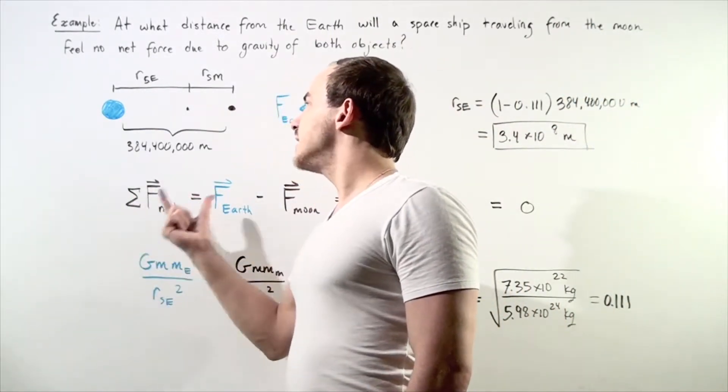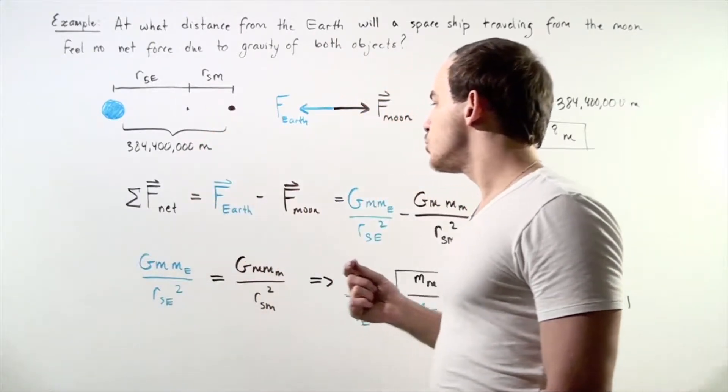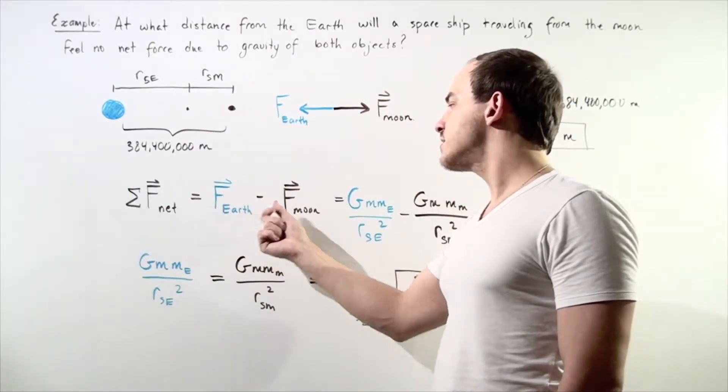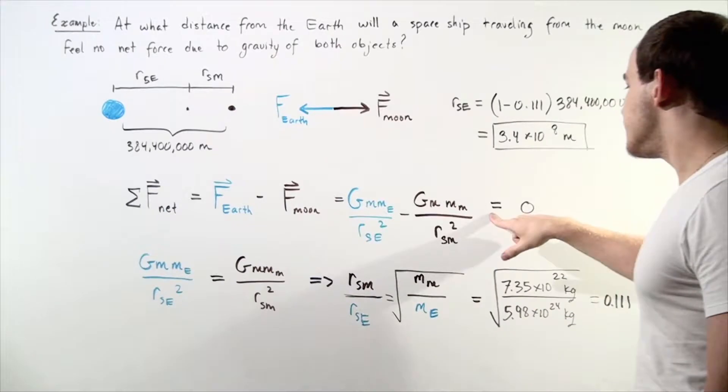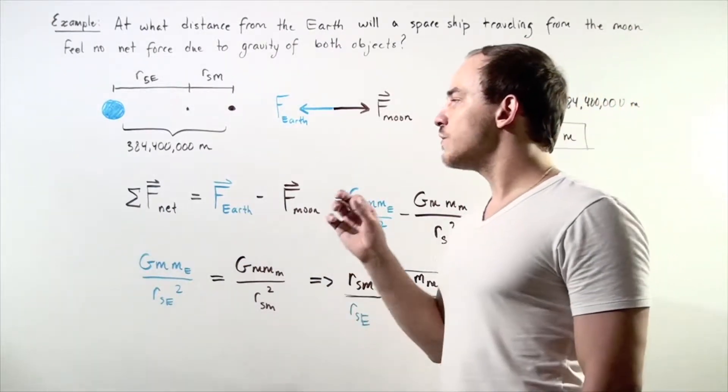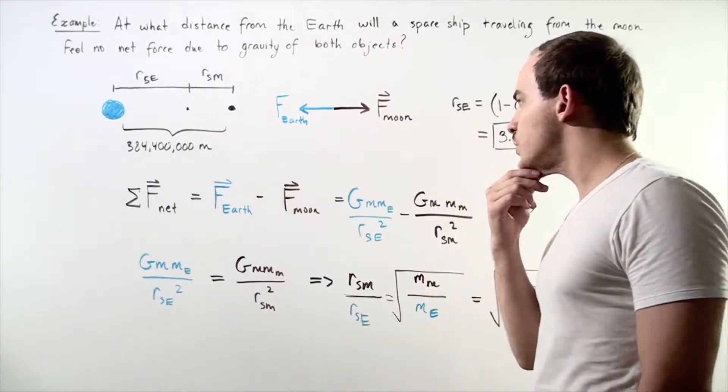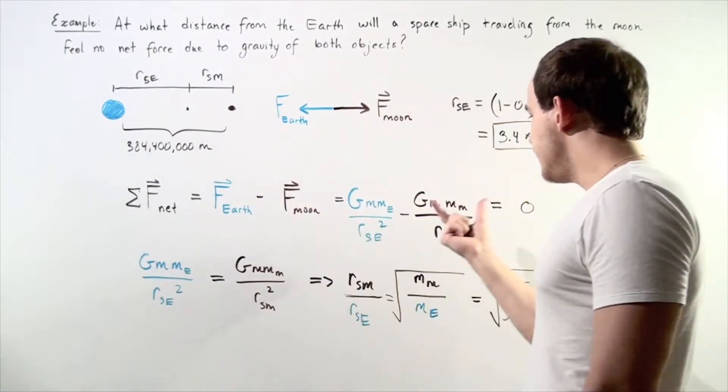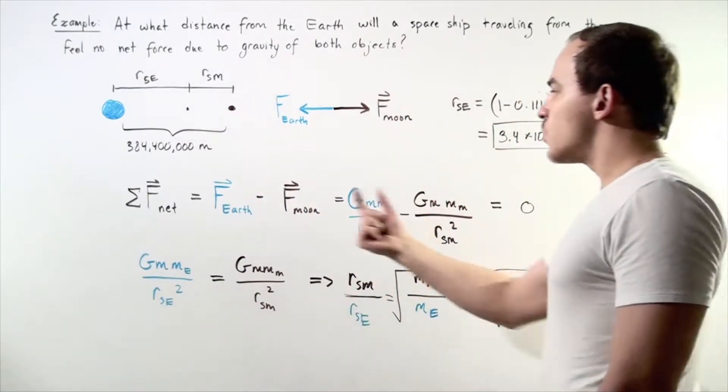The sum of all the forces acting on our object is equal to the force of the Earth minus the force of the Moon, and this entire thing equals zero. We can use our universal law of gravitation to replace our forces in the following format.